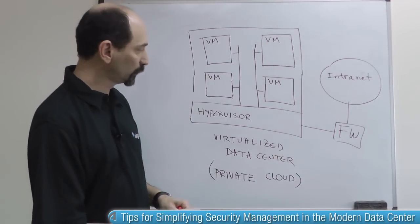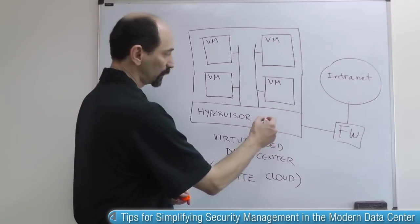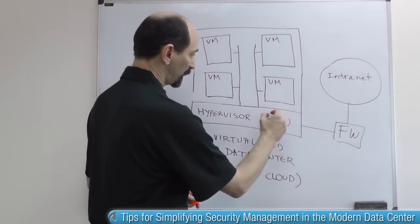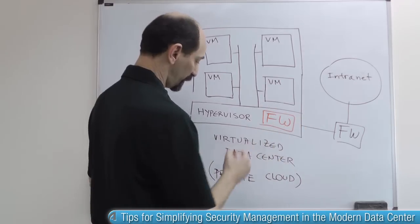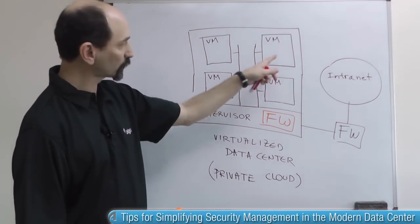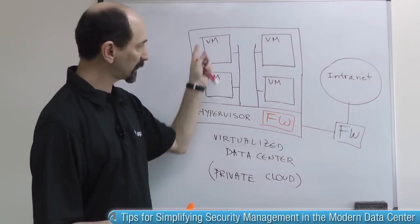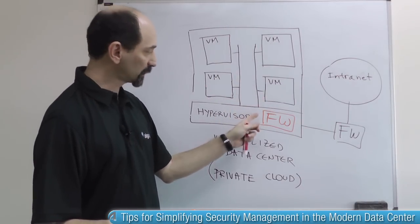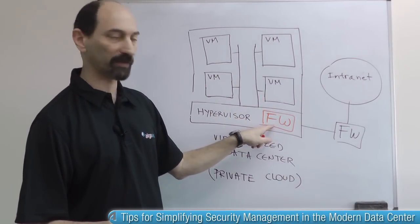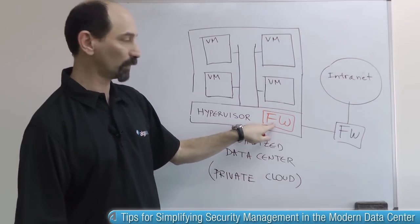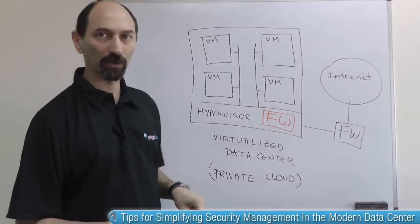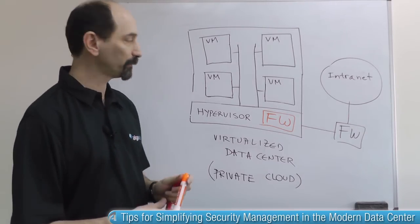Right now you really have two types of options. You could have a hypervisor-level firewall placed inside the hypervisor. If you do that, all traffic between VMs inside the private cloud has to go through the hypervisor, which means it has to go through the hypervisor firewall. That's your point where you can control and filter the traffic and set the policy. So that's one option.